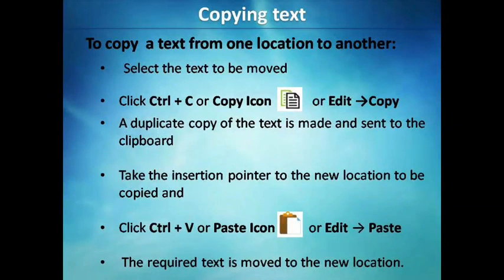Copying text is similar to moving text but with one difference. In moving text, we remove the text, but in copying text, we create a duplicate copy of the existing text. To copy text from one location to another, we follow these steps: first, select the text using keyboard or mouse. After selecting, copy the text using any one of three options — press Ctrl+C, click the copy icon from the toolbar, or choose Copy from the Edit menu.